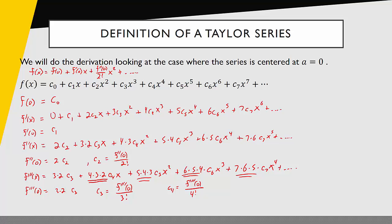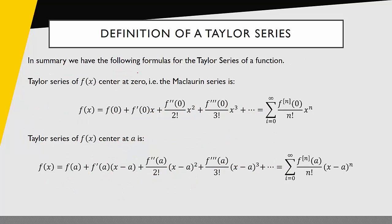So this is the process of finding the derivation for that Taylor series. If we take all this information and summarize it into our two big formulas we'll see the following. The Taylor series for a function centered at zero, which we actually have another name for - we actually call it the Maclaurin series when it's specifically centered at zero - has the following equation.